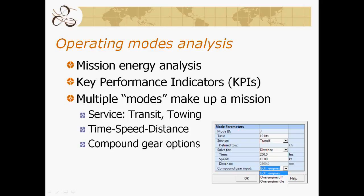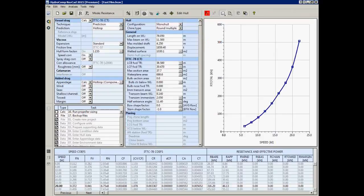Modes can be of a transit type — traveling at a particular speed over a distance or time — or a towing application where you want to generate a particular tow pull or maximize towing capability. A harbor tug is a good example of a multi-mode benefit, where you can look at time spent under towing versus transit operations. We can also utilize the compound gear options in NAVCAD for a two-engine-into-one compound gear single shaft output.